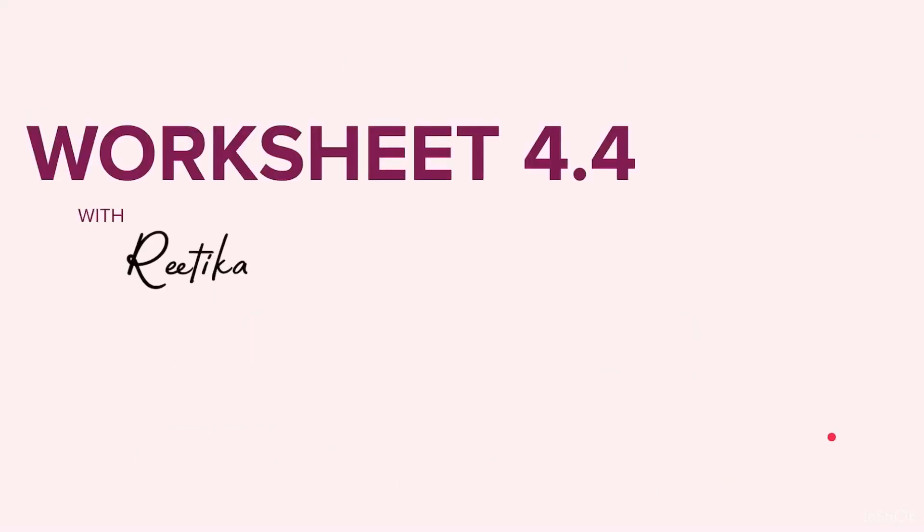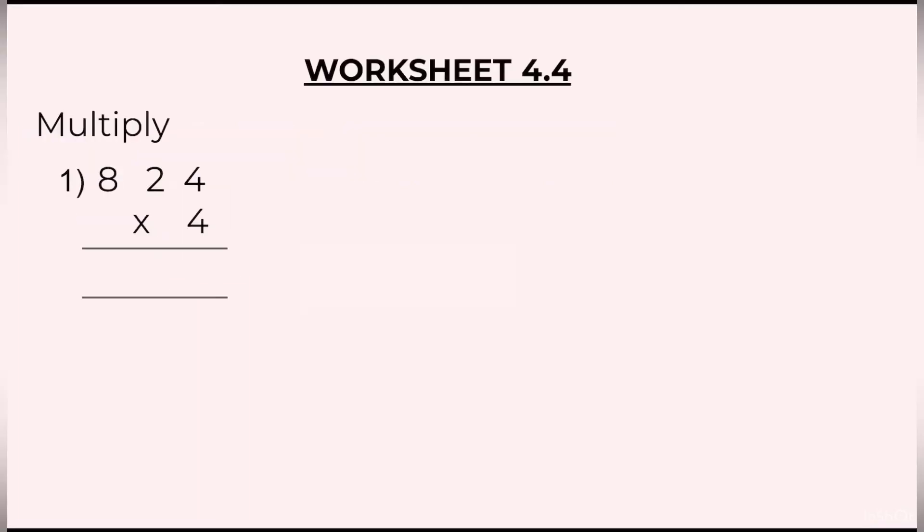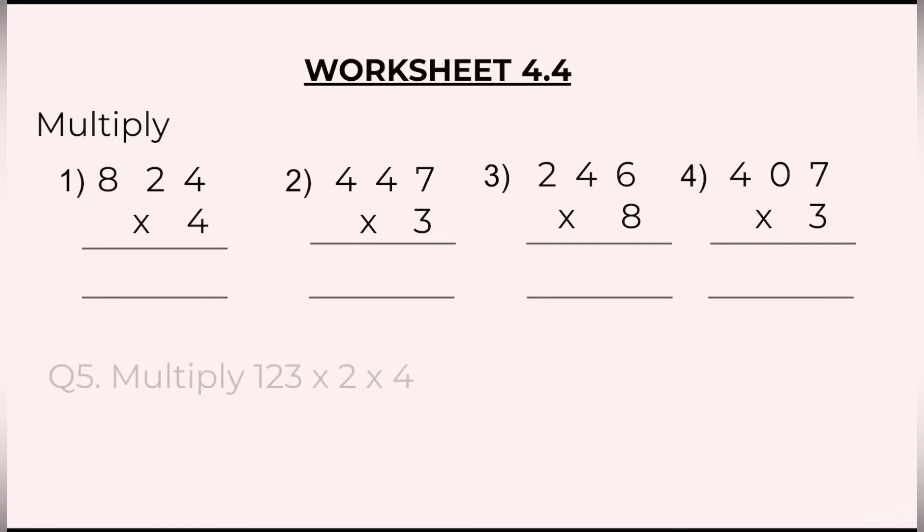Now we are ready to do worksheet 4.4. Question 1: 824 × 4. Question 2: 447 × 3. Question 3: 246 × 8. Question 4: 407 × 3. Question 5: Multiply 123 × 2 × 4. Now students, please pause the video here. Note on the questions in your copy, solve them, and once you have completed, look at the solutions.